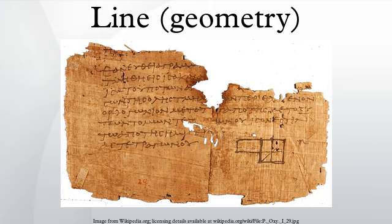One advantage to this approach is the flexibility it gives to users of the geometry. Thus in differential geometry a line may be interpreted as a geodesic, while in some projective geometries a line is a two-dimensional vector space. This flexibility also extends beyond mathematics and, for example, permits physicists to think of the path of a light ray as being a line.